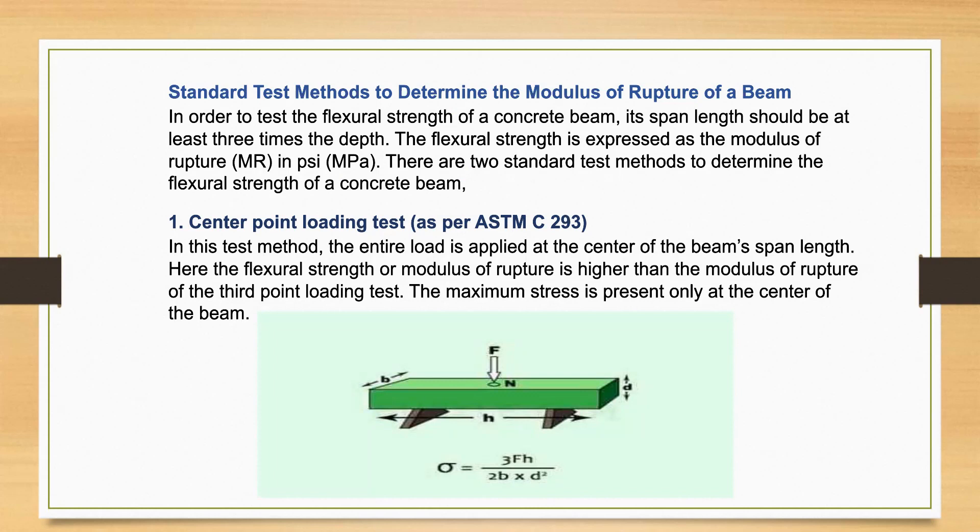The center point loading test: In this test method, the entire load is applied at the center of the beam's span length. Here, the flexural strength or modulus of rupture is higher than the modulus of rupture of the third point loading test. The maximum stress is present only at the center of the beam.